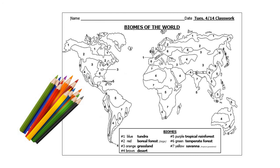Go ahead and finish off this unit by taking the worksheet and some colored pencils and color in that biomes of the world map. This will help you start becoming familiar with the different types of biomes we'll study. For example, everywhere you see a number one on the map, color it blue because that is the tundra biome. Go through each section of each continent and shade them in according to the colors shown at the bottom. Send me a picture of this when you are finished.